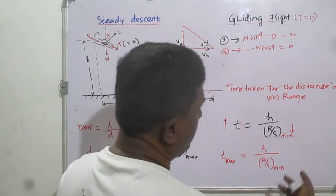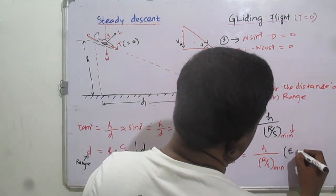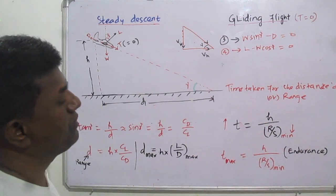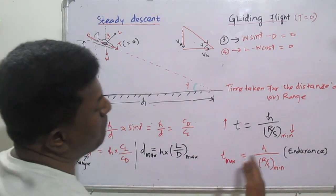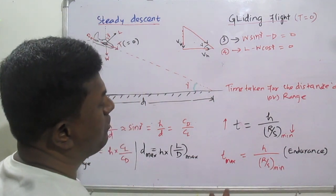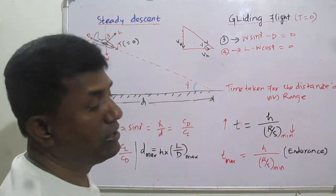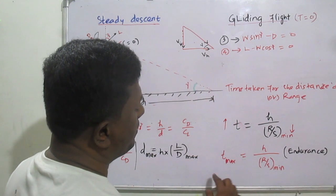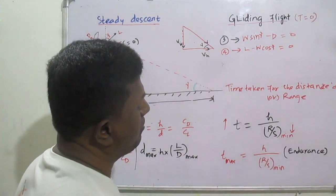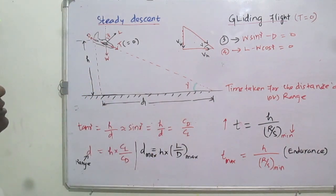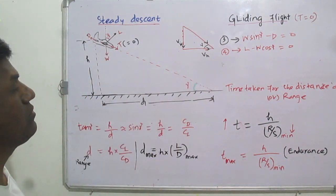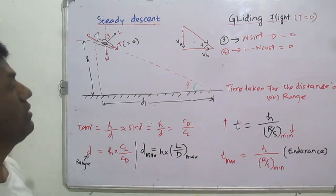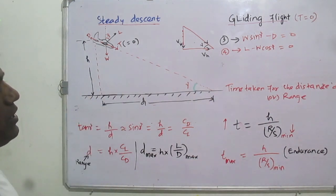We have a separate topic for range and endurance in steady-level flight which we will discuss later. But for gliding flight, maximum time — that is, endurance — is achieved with minimum rate of sink. I hope this lesson clarifies how gliding flight works and how we obtain the steady descent conditions.